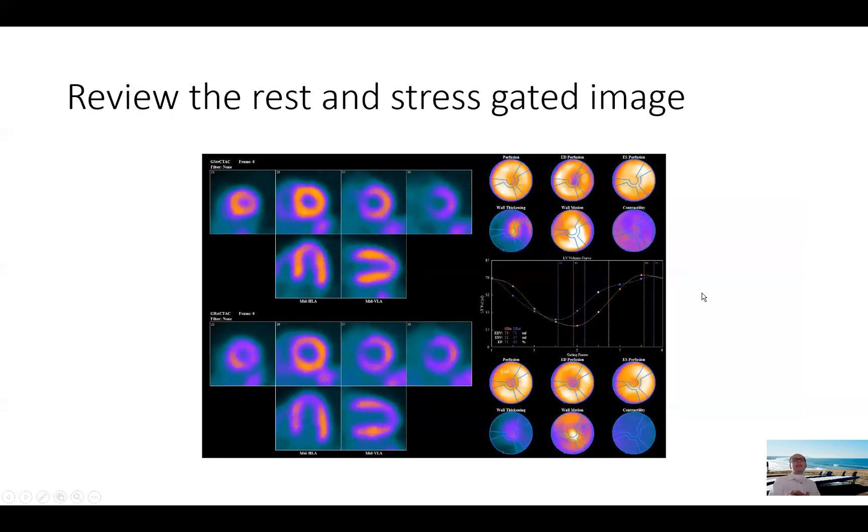The next images we look at are the gated images. With SPECT and with PET at least at our center, we look at both the rest images and the stress images. So we look at the motion, the wall motion, basically representing thickening, the brightness representing thickening of the heart during systole. We look at segmental wall motion and abnormalities if present. In this example, of course, this is a normal heart, so we don't expect to see that. And then we look at the ejection fraction in the rest and stress images seen here showing an ejection fraction, 62% at rest going up to 71% post-stress with the volumes also decreasing with stress.